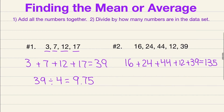Then we take our sum of 135 and divide it by how many numbers are in our data set. This time we have 1, 2, 3, 4, 5 numbers, so we're dividing by 5. 135 divided by 5 gives us a nice whole number of 27. You can get a decimal or a whole number for your answer.